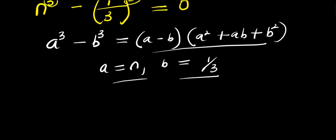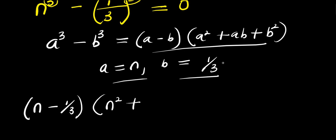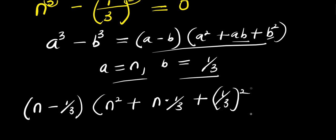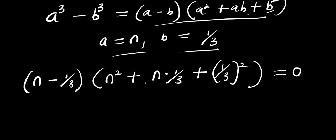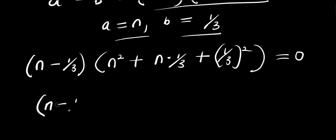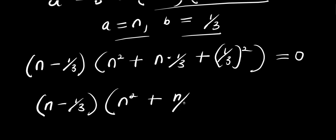So let's insert a and b right here. We are going to have (n minus 1 over 3) times (n squared plus n times 1 over 3 plus (1 over 3) squared), and this equals 0. Simplifying: (n minus 1 over 3) times (n squared plus n over 3 plus 1 over 9) equals 0.